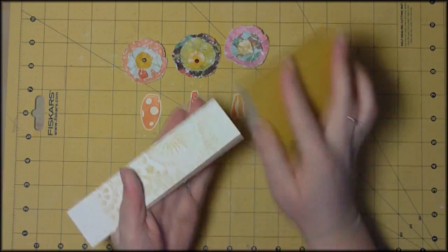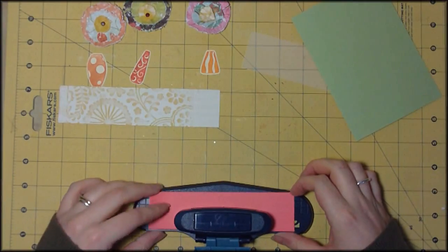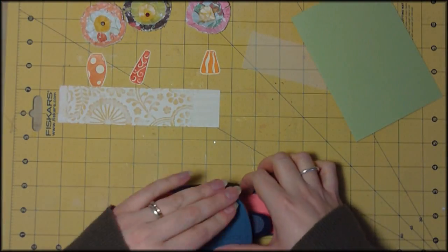So when you sand over it you get this lovely different colored texture coming through. So I've just roughed that up with a bit of sandpaper.